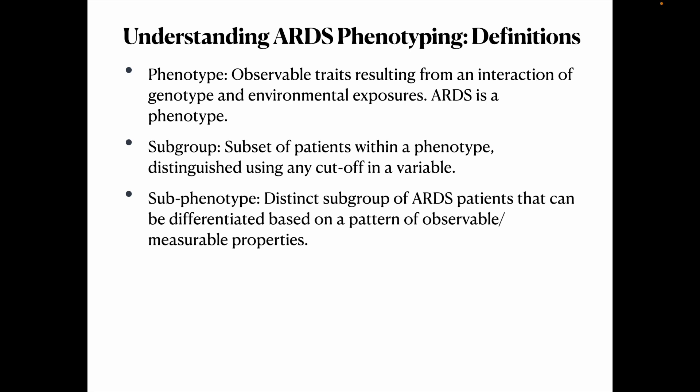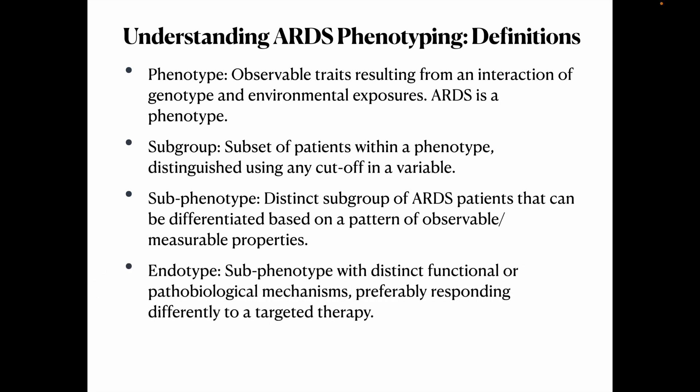Subphenotypes are distinct subgroups differentiated based on a pattern of measurable or observable properties. Endotypes are subphenotypes with a distinct functional and pathobiological mechanism, differentiating them from other subgroups and allowing them to be targeted by a specific therapy. For example, in COVID-19 ARDS, steroids and tocilizumab are therapies that specifically benefit that endotype.